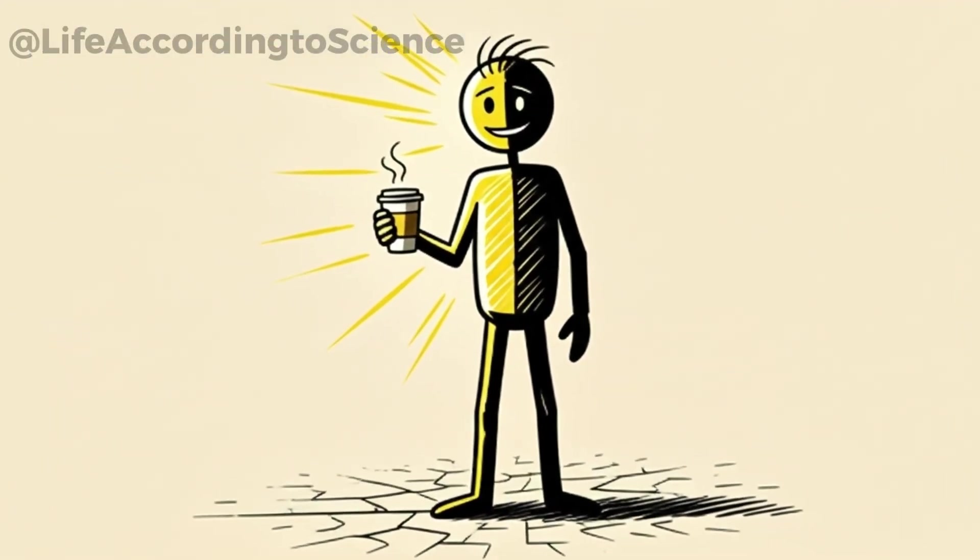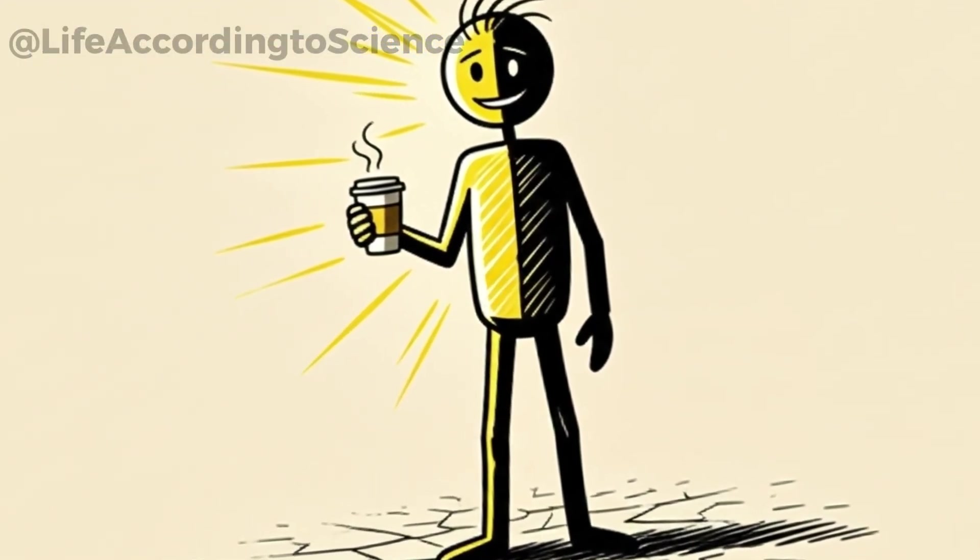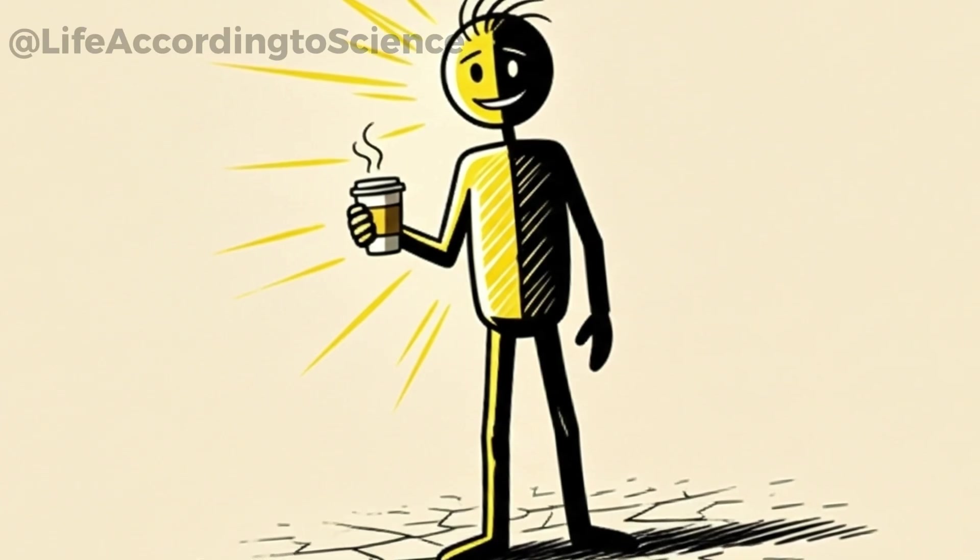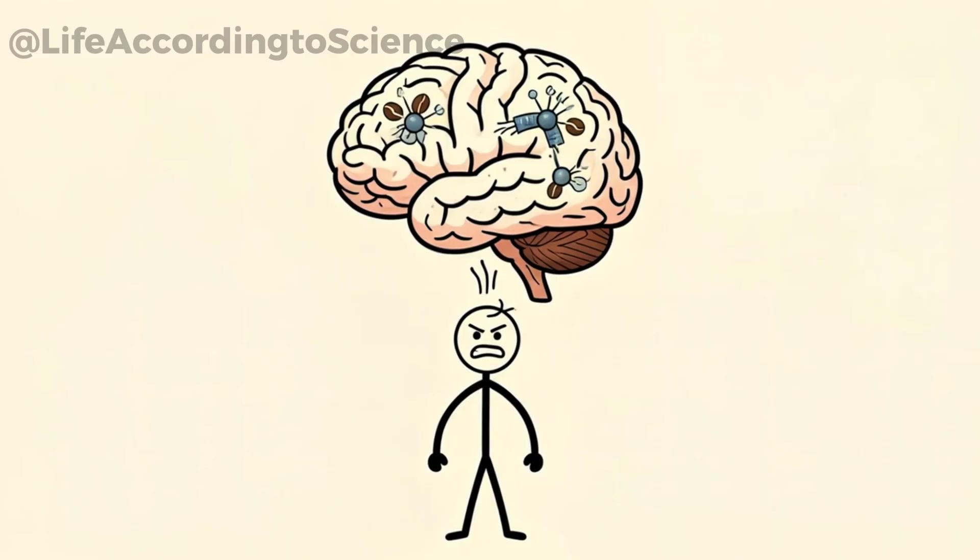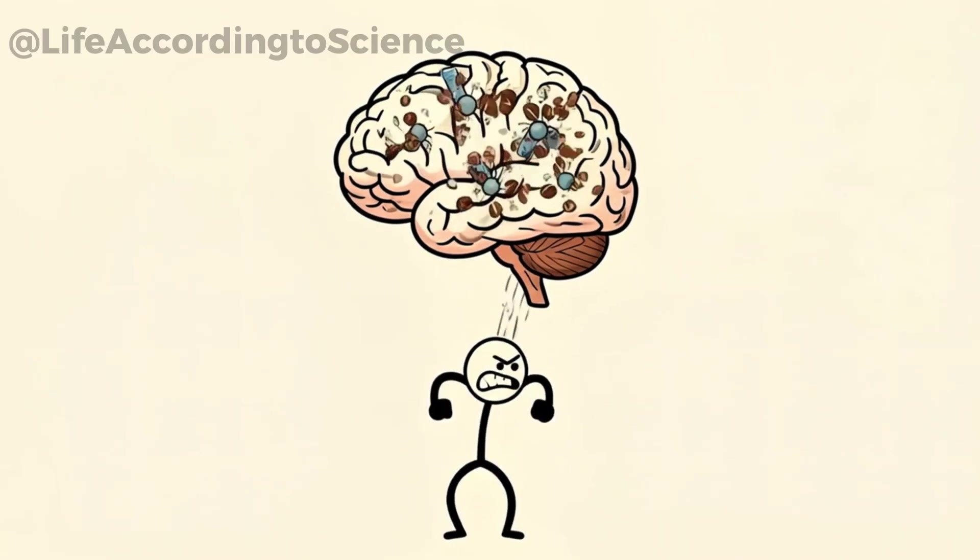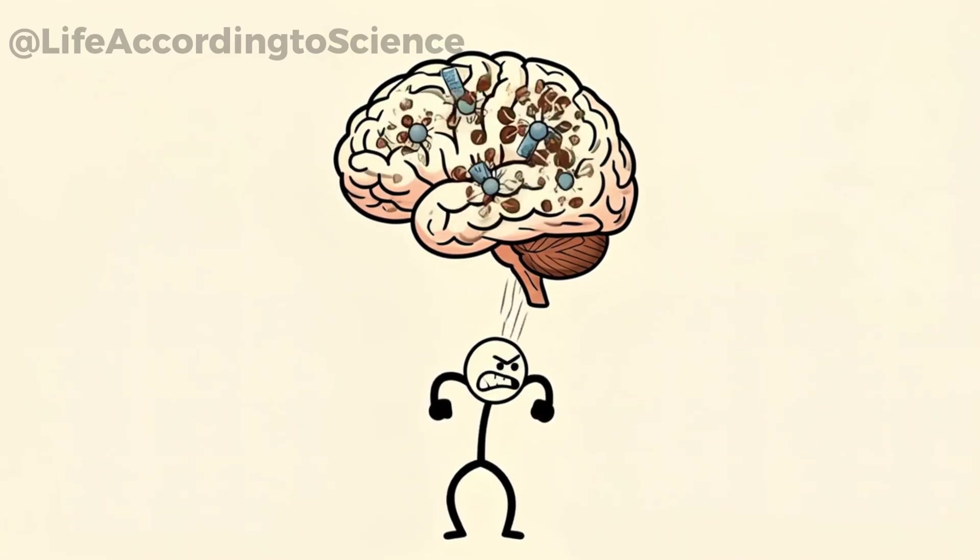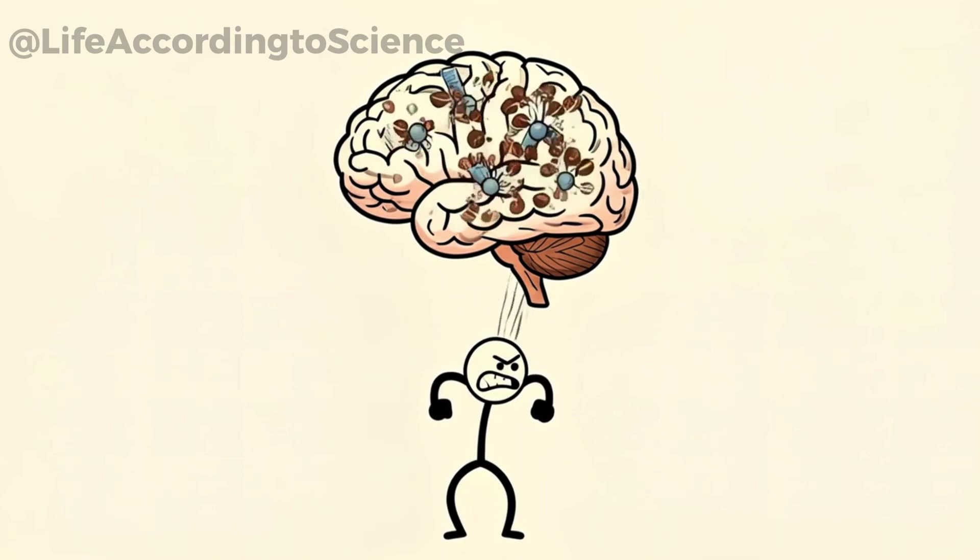But here's the twist. The same process that makes you feel unstoppable also sets the stage for dependence. The more you block adenosine, the harder your brain fights back, creating a delicate balance that can flip at any time.